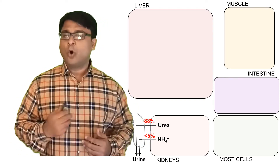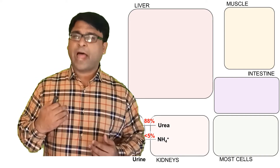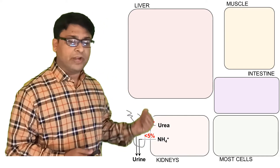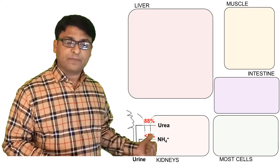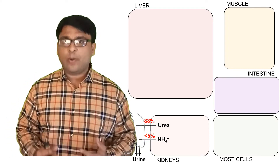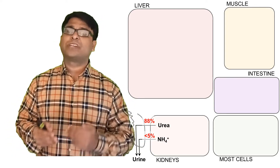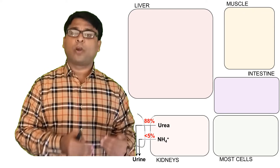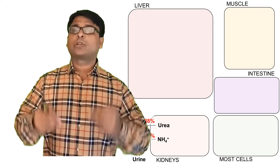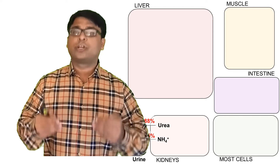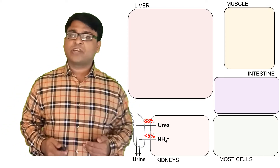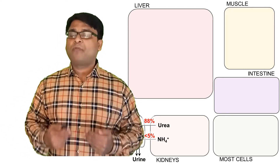Most of the secretion of nitrogen end product is via urea, which is around 85 to 88 percent, while ammonium is less than 5 percent. These are the end products which exit the body in the form of urine, and they are the end products of amino acid, nitrogen, and protein metabolism.